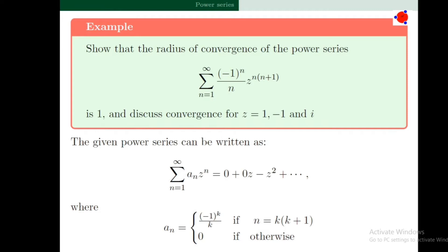Note that the coefficient of z^n in this power series is (-1)^k divided by k, if n is of the form k(k+1). For all other values of n, the coefficients are zero. So the coefficient a_n can be written as (-1)^k / k if n = k(k+1), and zero otherwise.